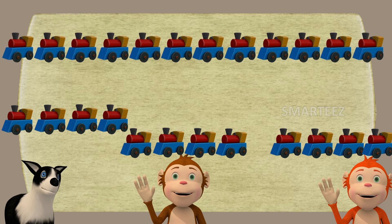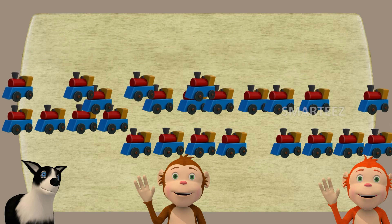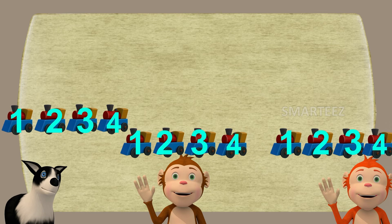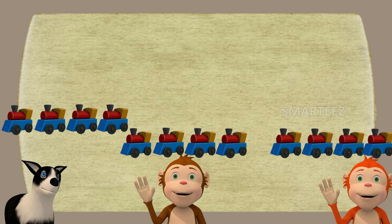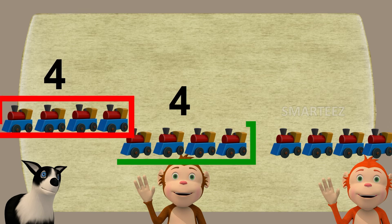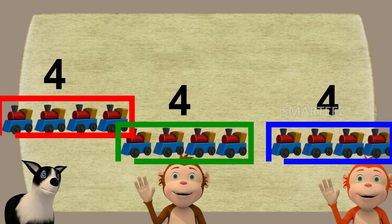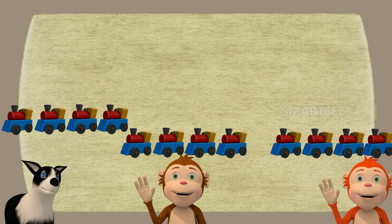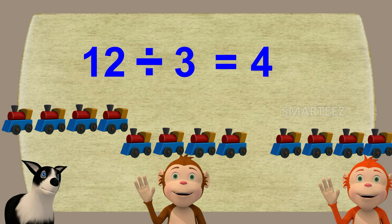I split 12 toy trains among the 3 of you, and you got 4 toy trains each. When we split 12 toy trains between 3 people, each one gets 4 toy trains. 12 divided by 3 equals 4.